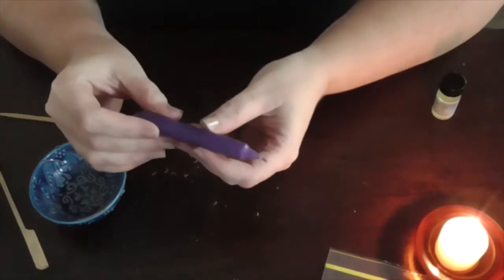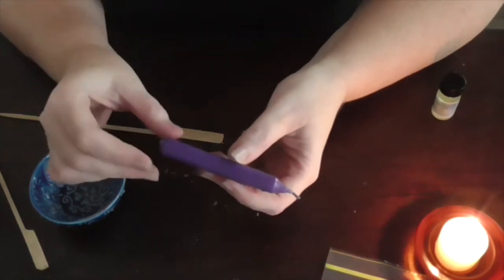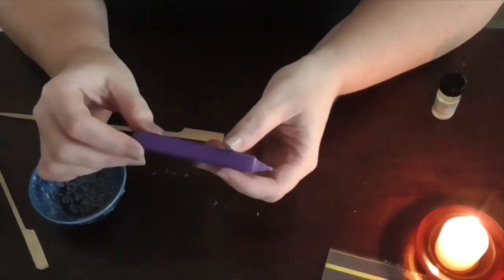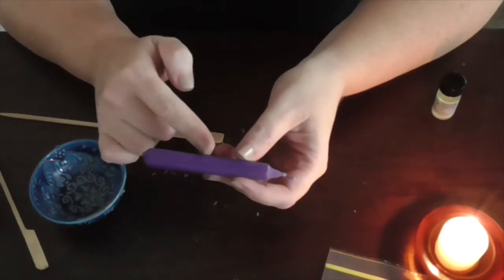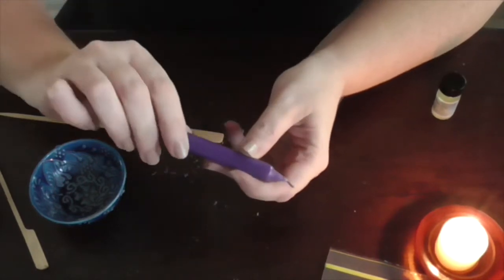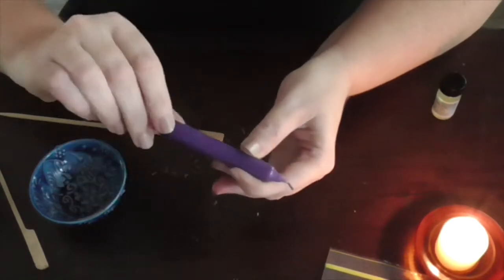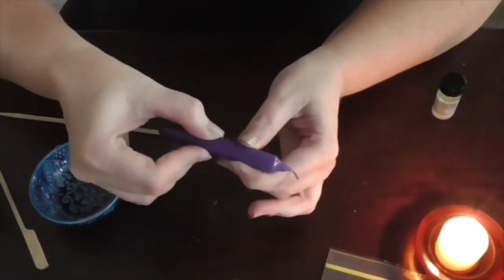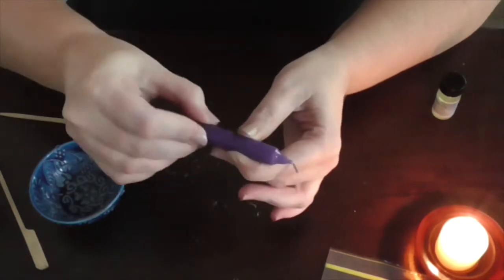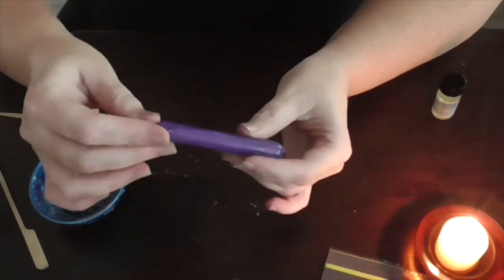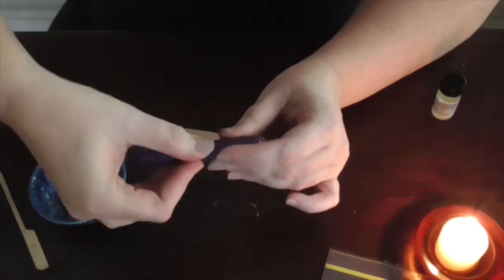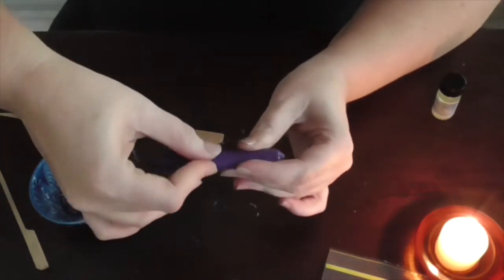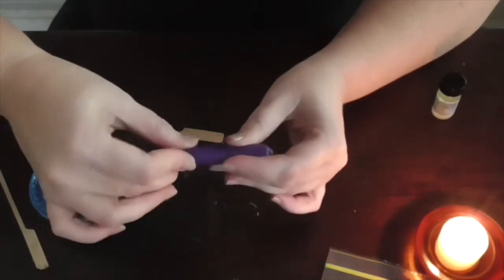And this is where you would then push your intent in. So starting from the outside and working your way in, you would push the intent, visualize and think about what it is that you want this candle to achieve. And you would twist it in. And then you would go to the other side and you would twist it in, getting all that oil on your fingers and pushing it into the candle.